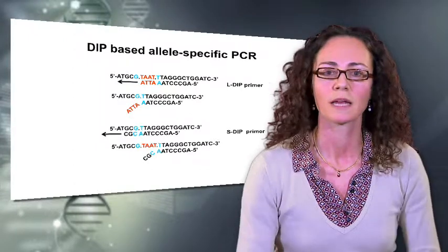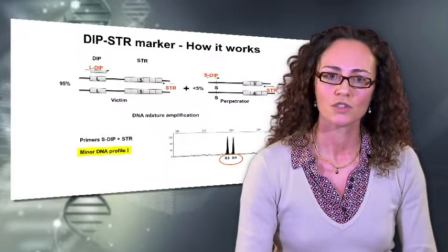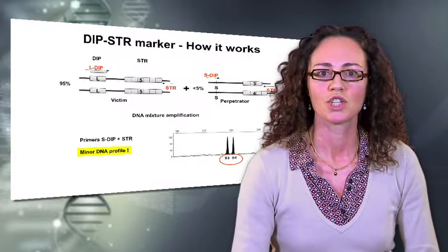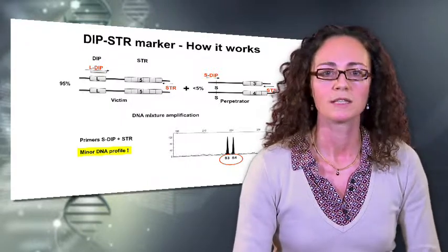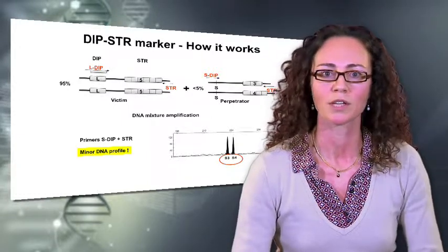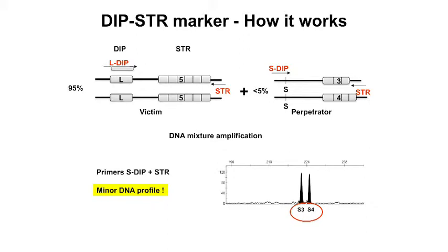Let's see how it works with an example. Here we have a DNA mixture where the major DNA, which could be the DNA of the victim, is genotype L5-L5 for the Deep STR. This is mixed with a small quantity of DNA of the perpetrator, for example, which might be S3 and S4.